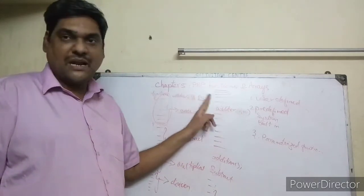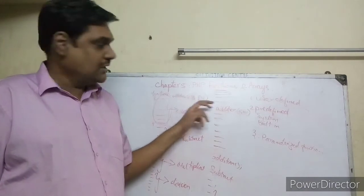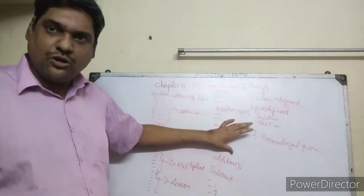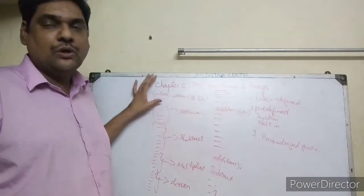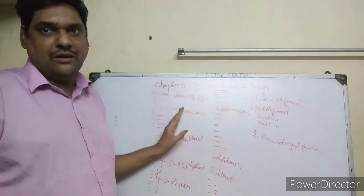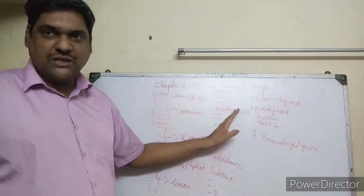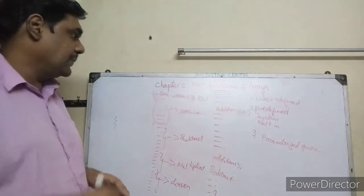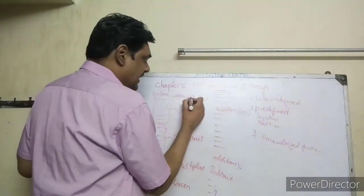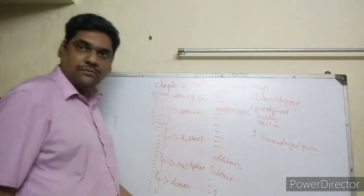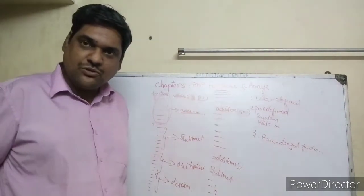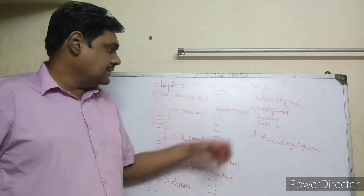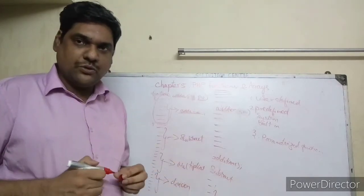When you pass two arguments in the call, there must be two parameters in the function. You first design the function with the needed parameters, then when calling you provide that many values. For example, if you pass 5 and 10, then 5 gets stored in n1 and 10 gets stored in n2.